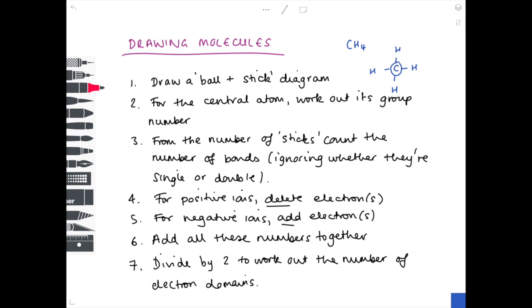For step two, for the central atom, work out its group number. In this case, from our ball and stick diagram, we can see that carbon is the central atom. Carbon is in group four, so I'm going to make a note that it is in group four. From the number of sticks, count the number of bonds, ignoring whether they're single or double. We can look at the number of sticks surrounding that carbon atom. There are four sticks belonging to the four hydrogen atoms, meaning that there are four bonds.